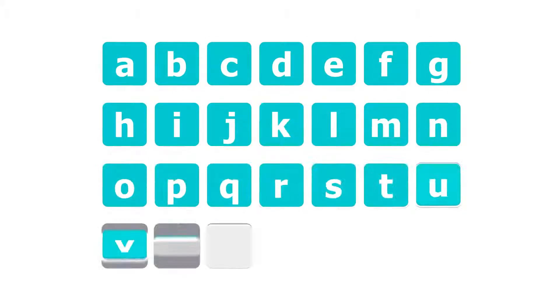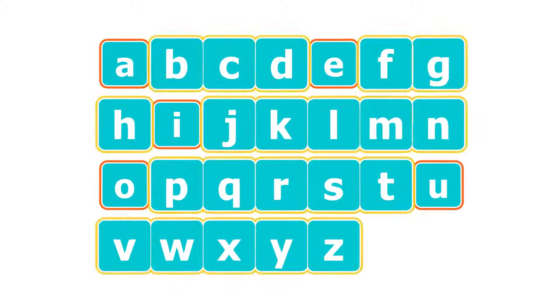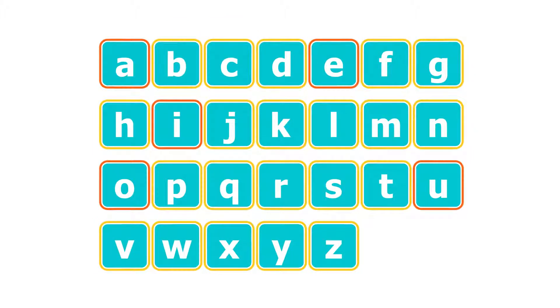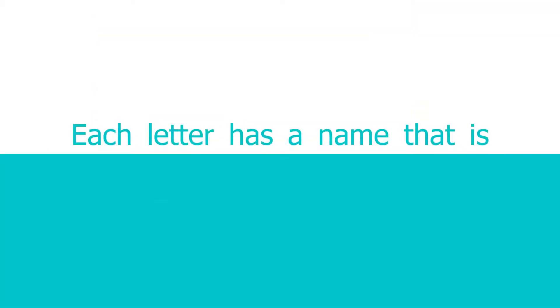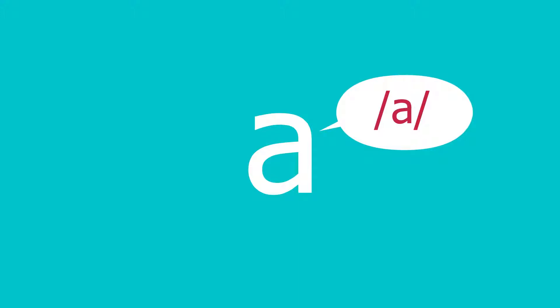The English alphabet has 26 letters that are either vowels or consonants. Each letter has a name that is different from the sound it makes. For example, the sound for the letter named A is A, and the sound for the letter named G is G.